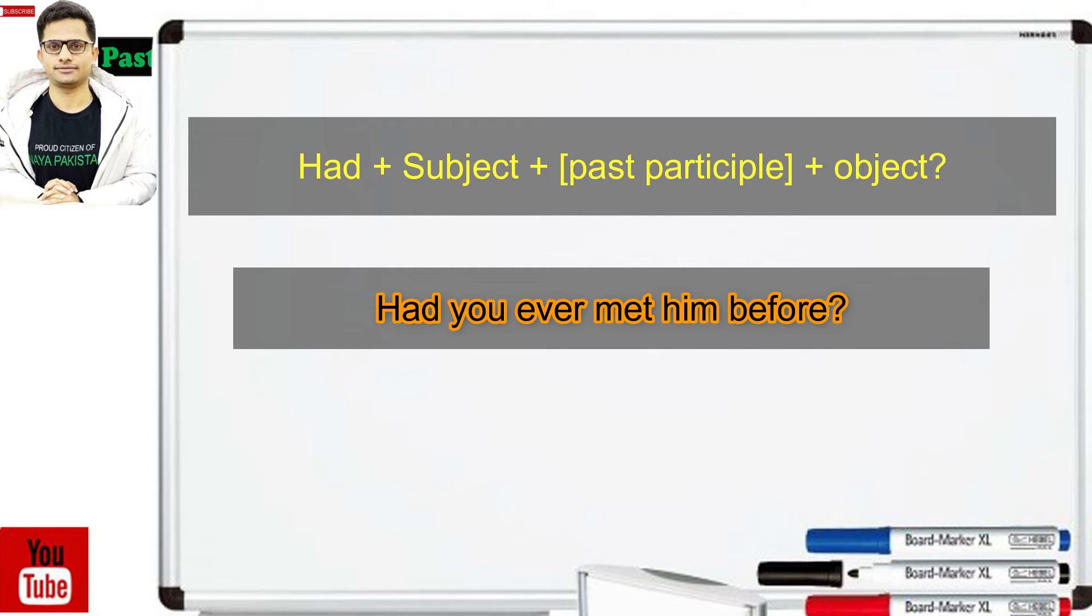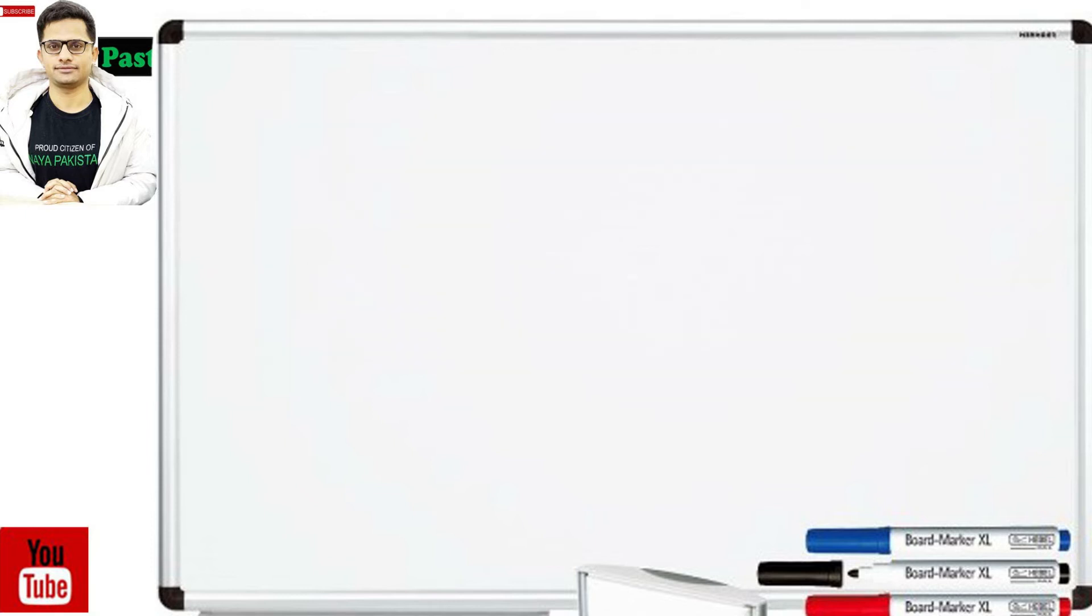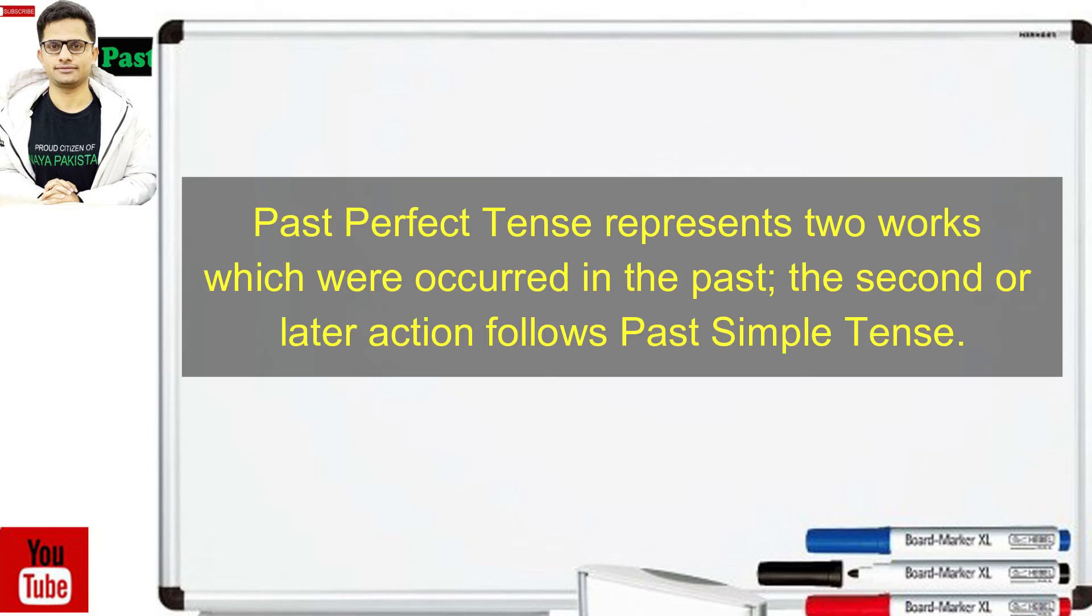So now let's learn more about past perfect tense. Past perfect tense represents two works which occurred in the past. The second or later action follows past simple tense. فعل ماضی مکمل دو کاموں کی نمائندگی کرتا ہے جو ماضی میں پیش آتے ہیں۔ دوسرا یا جو بعد والا جملہ ہوتا ہے وہ زمان ماضی سادہ یعنی past simple tense کا ہوتا ہے جبکہ اس سے پہلے والا جو sentence ہوتا ہے وہ past perfect tense کا ہوتا ہے۔